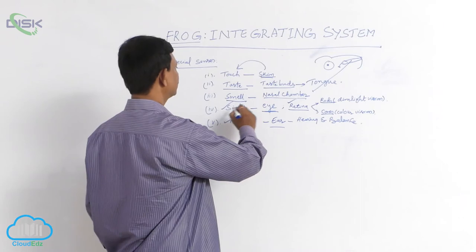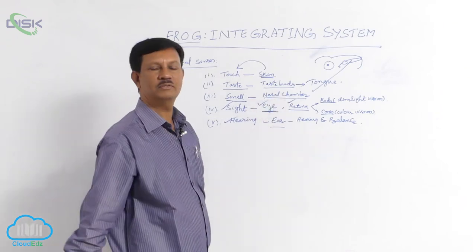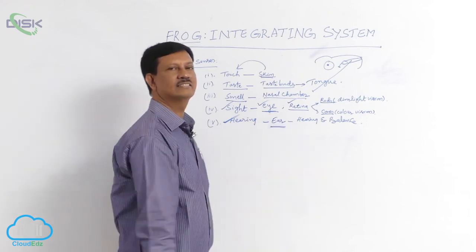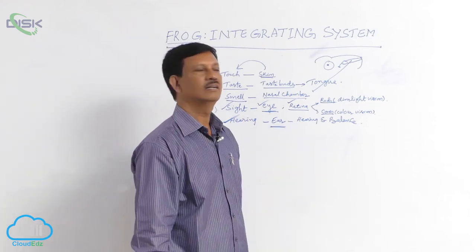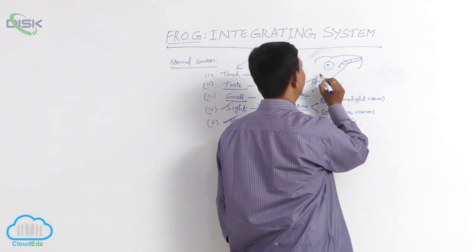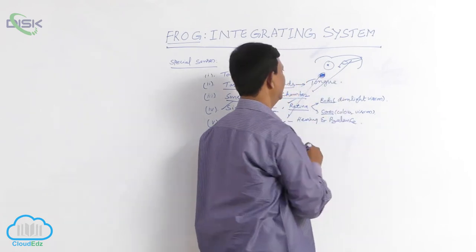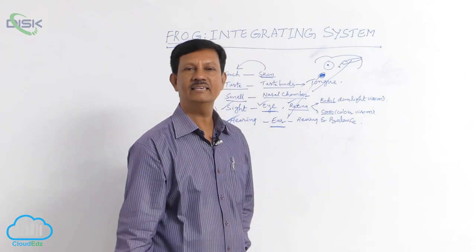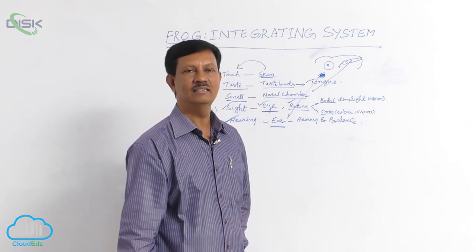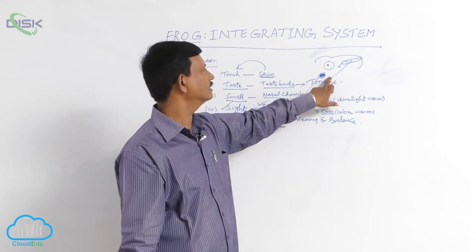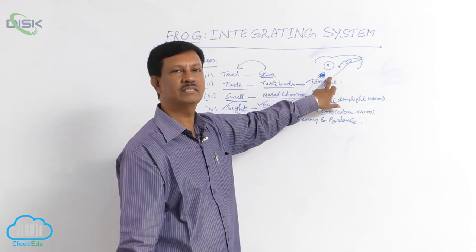Fifth is ears. Behind the eyes, a tympanic membrane is present that opens into the middle ear and internal ear. In the internal ear, there are three semicircular canals, and sacculus and utriculus are present.